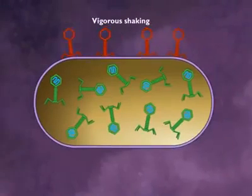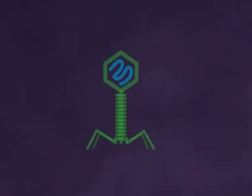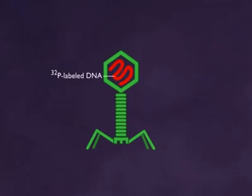Vigorous shaking caused the empty protein coats to be removed, but did not interfere with production of new phage in the cell. In the second part of the experiment, phage were produced in a medium containing P32 labeled deoxyribonucleotides. This resulted in a phage population with P32 labeled DNA, but no radioactive label in the protein.